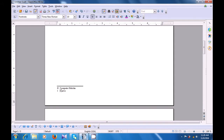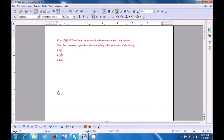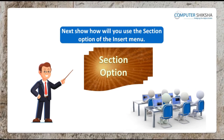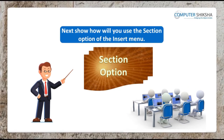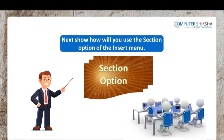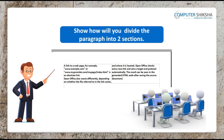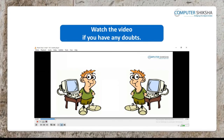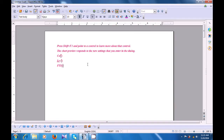It keeps getting linked. Whenever we click on the footnote, it brings us to the text. And when we click on the symbol on the text, it takes us to the footnote or the endnote. Next, show how will you use the section option of the Insert menu. Show how will you divide the paragraph into two sections. Watch the video if you have any doubts. Watching this video now, let us once again practice the use of the section option.